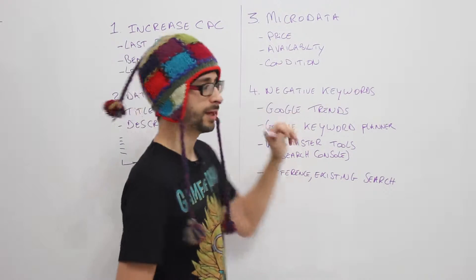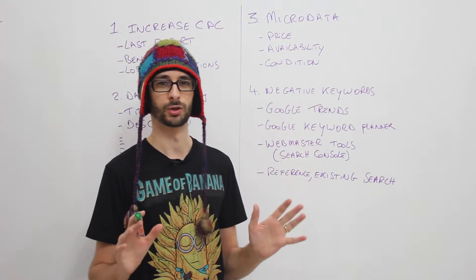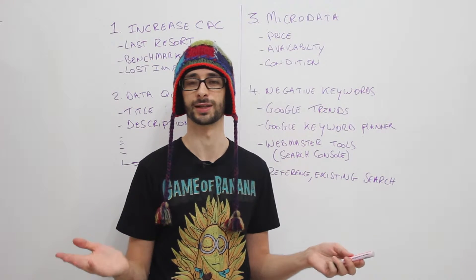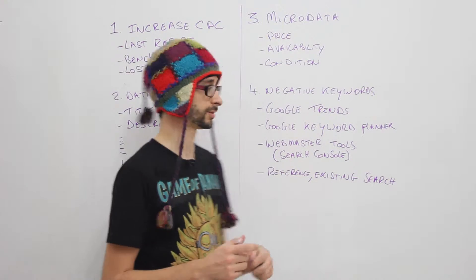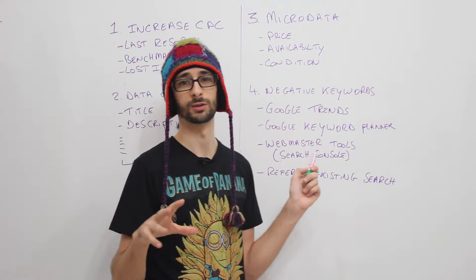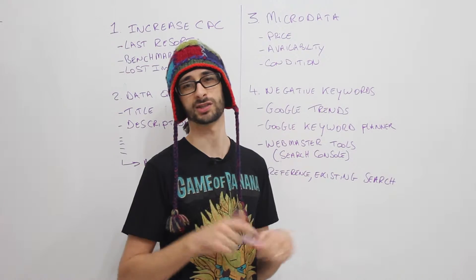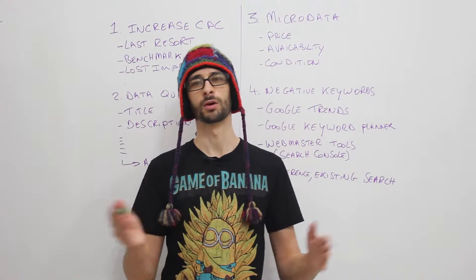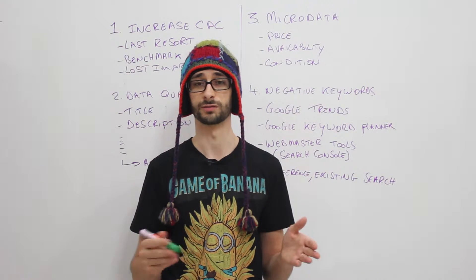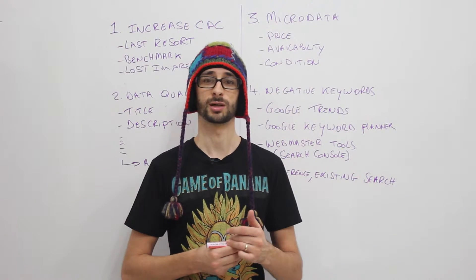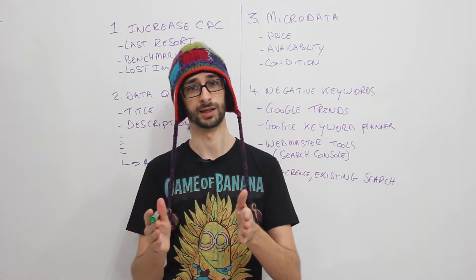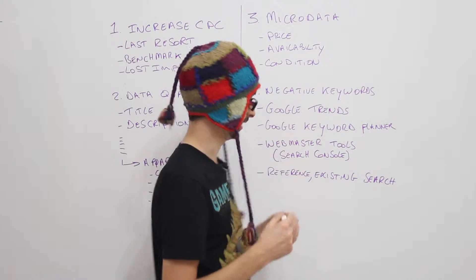Now if you have an existing negative keyword list, for example you're a merchant and you've had your Google Shopping already for half a year or a year, you might have already added negative keywords. By removing some existing negative keywords you might increase your impressions again. Why am I saying this? As we go along, the trend of certain search terms will change over time. So if for example a specific search term was negative in the past, it can be very popular at the moment where you will gain a lot of sales.